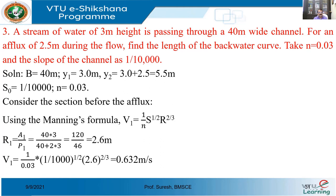So this is the given problem. First, we will note down the data given. Base width of the channel B is equal to 40 meter. This problem is similar to the problem we solved earlier — two sections: one section is far away from the obstruction, the other is upstream of the obstruction. At section 1-1, far away from the obstruction, the depth of flow y1 is 3 meter. At section 2-2, near the obstruction, y2 equals 3 plus 2.5, that is 5.5 meter. Slope is 1 in 10,000 and Manning's n is 0.03.